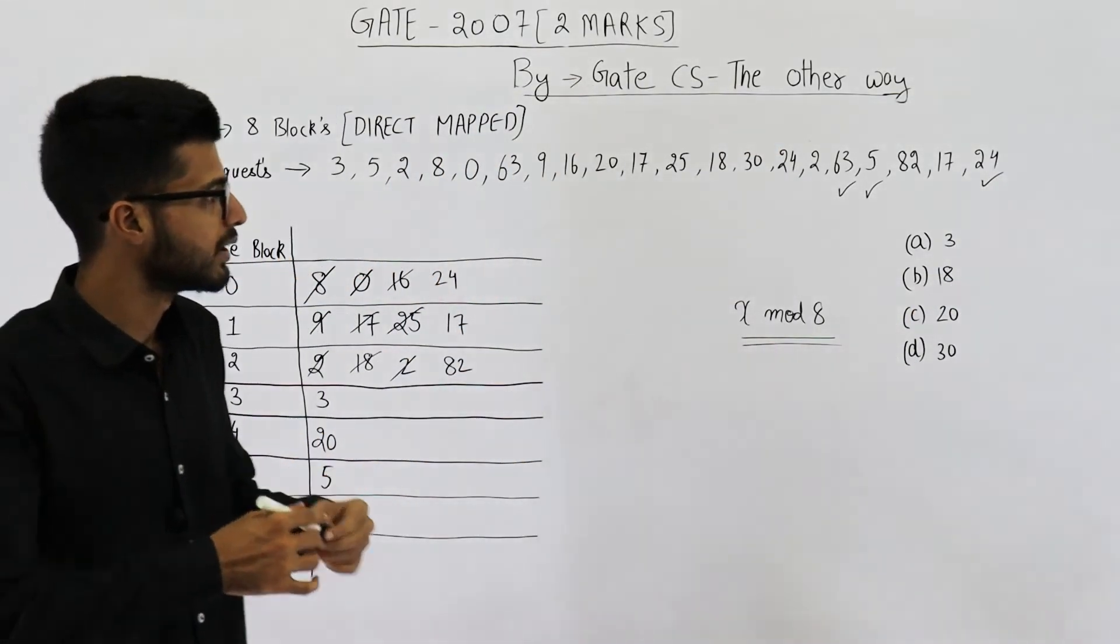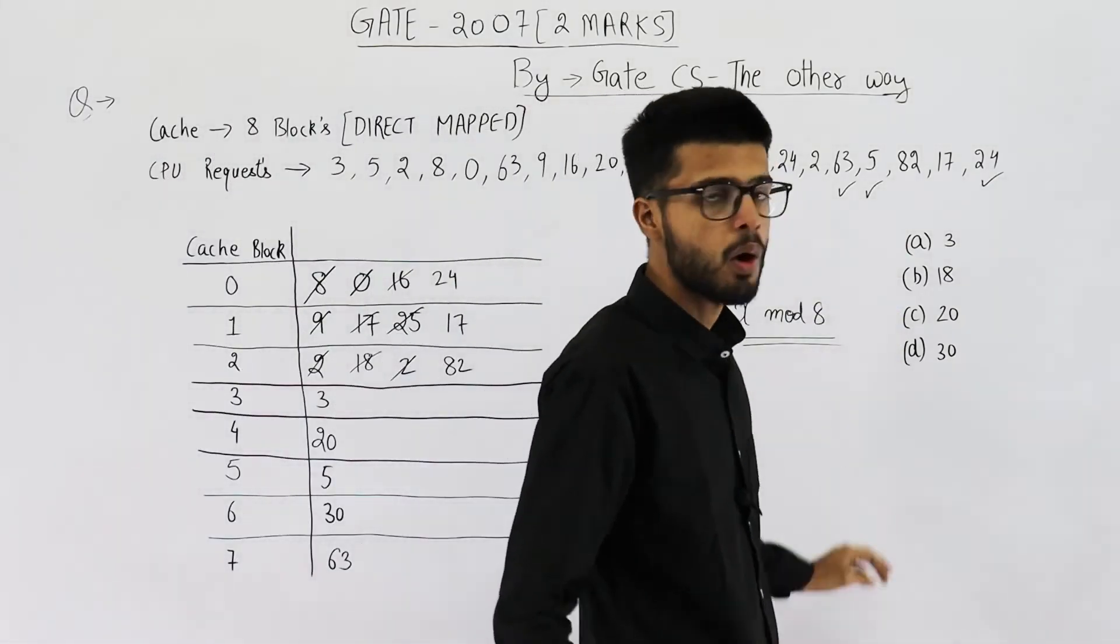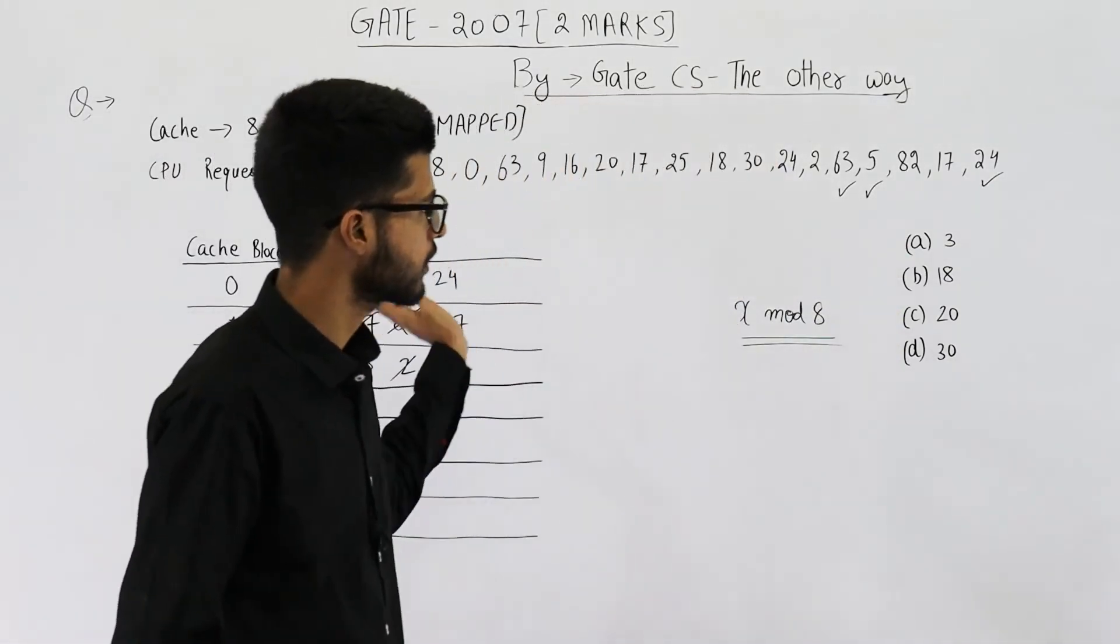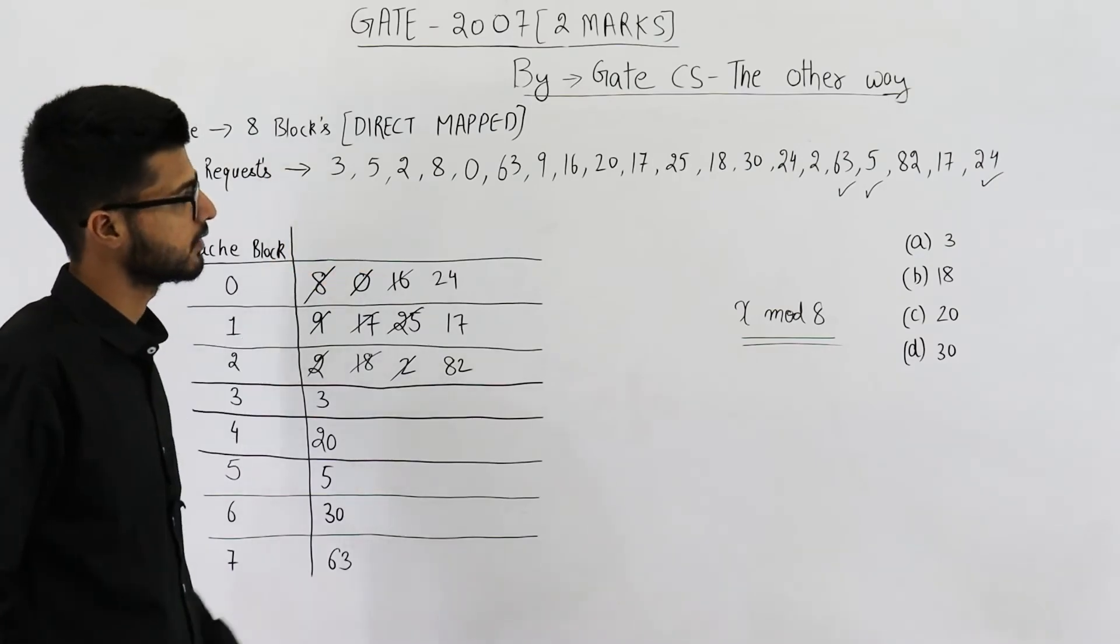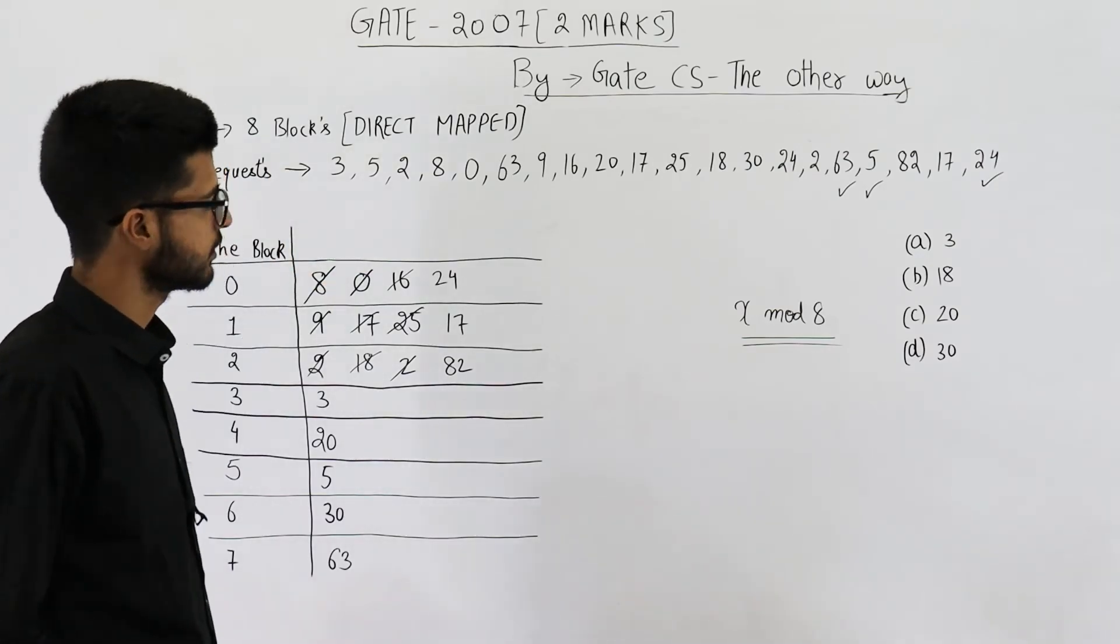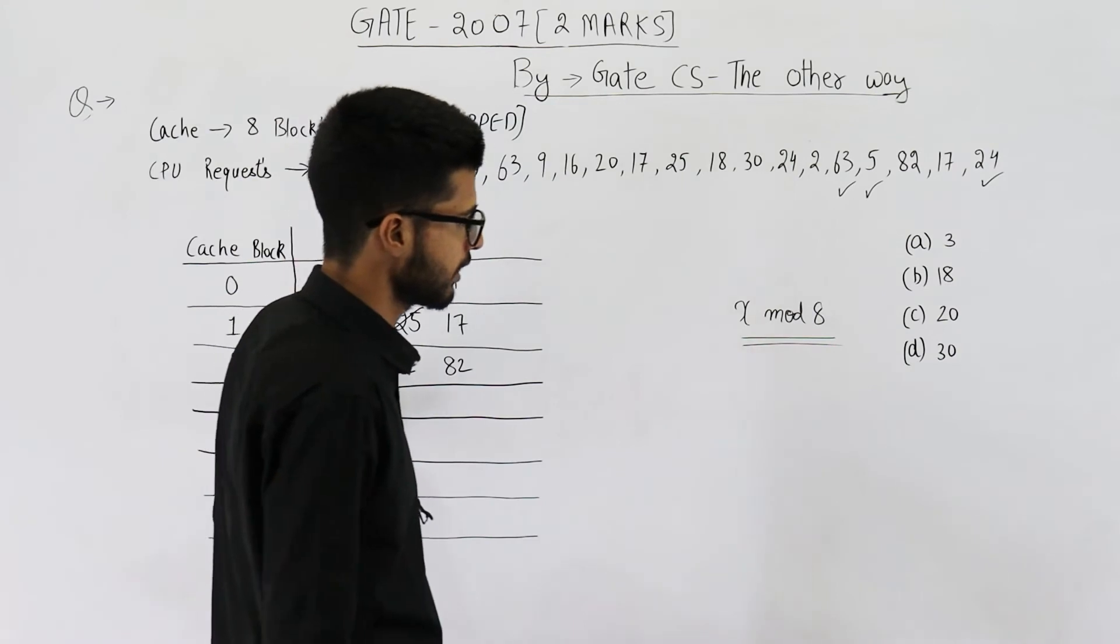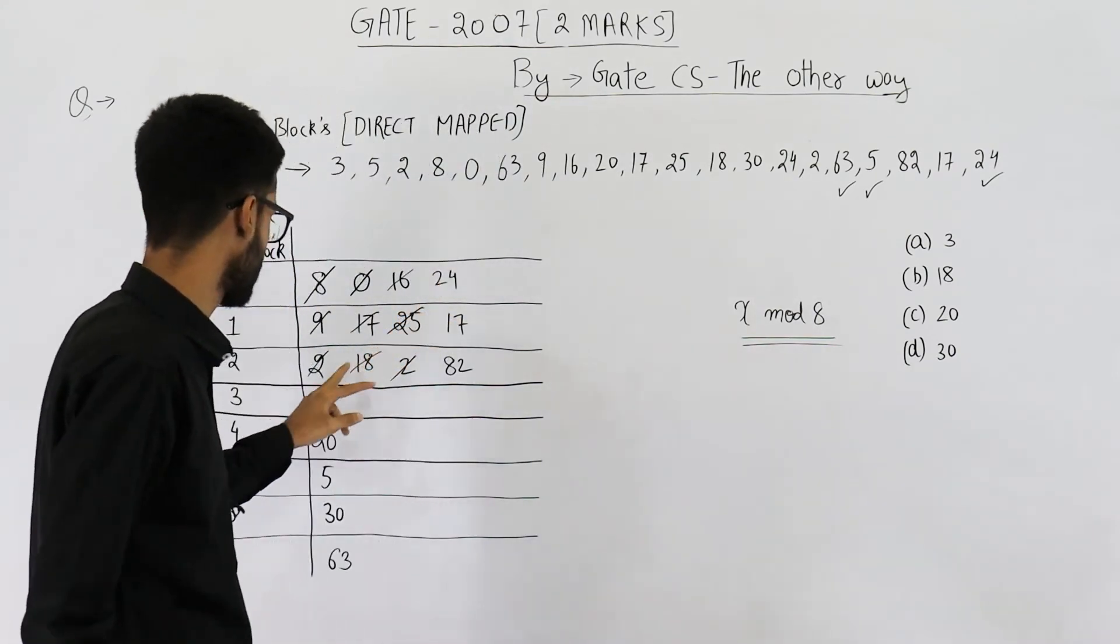Now they were asking which one out of all these will not be present in cache after servicing all these requests. So you can see 3, 3 is present in cache. Next one is 18.